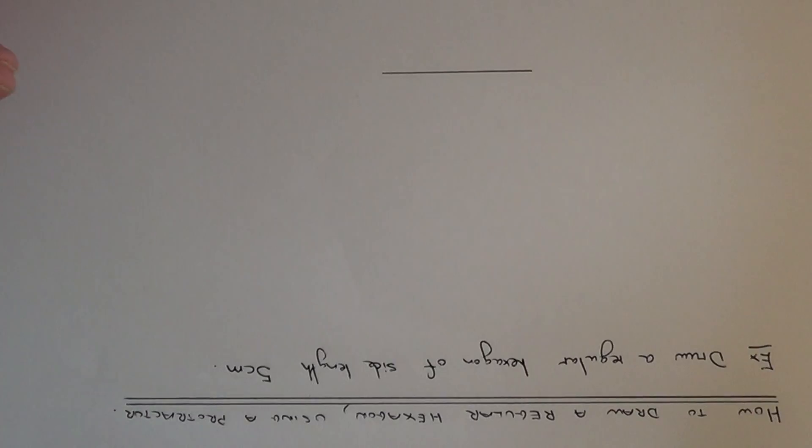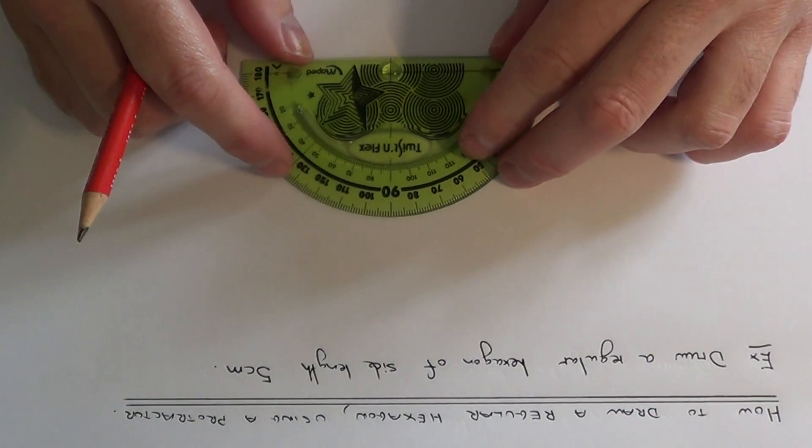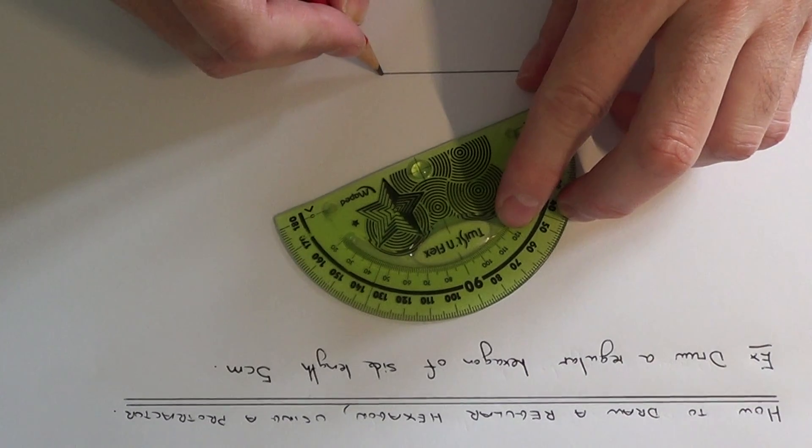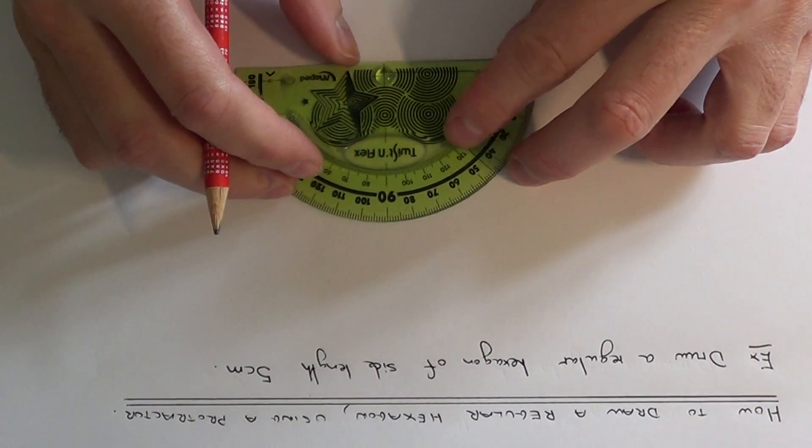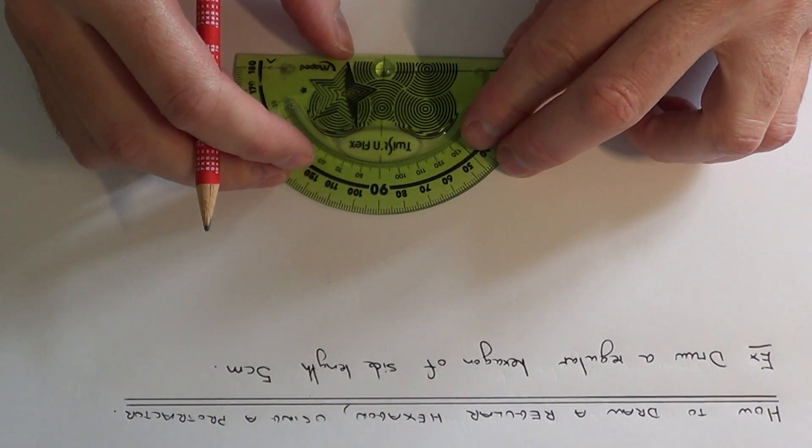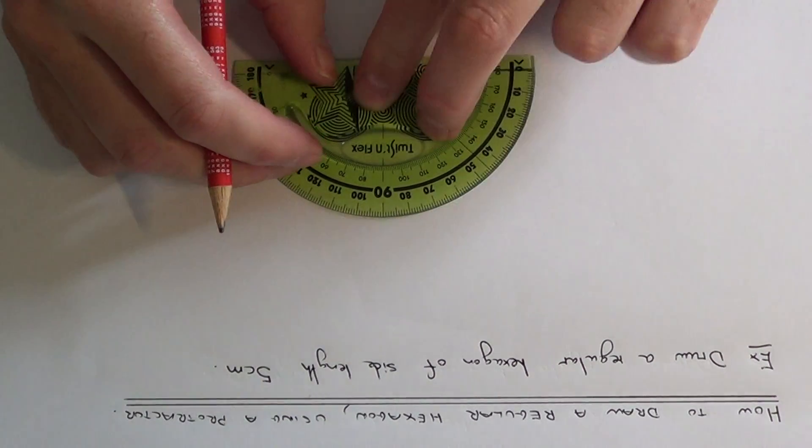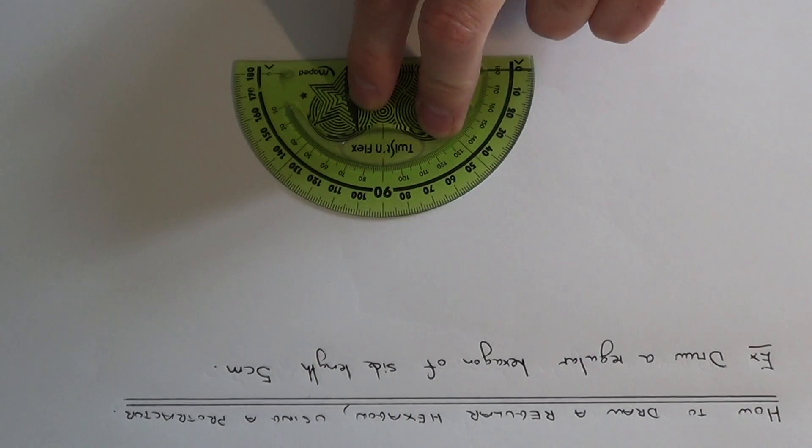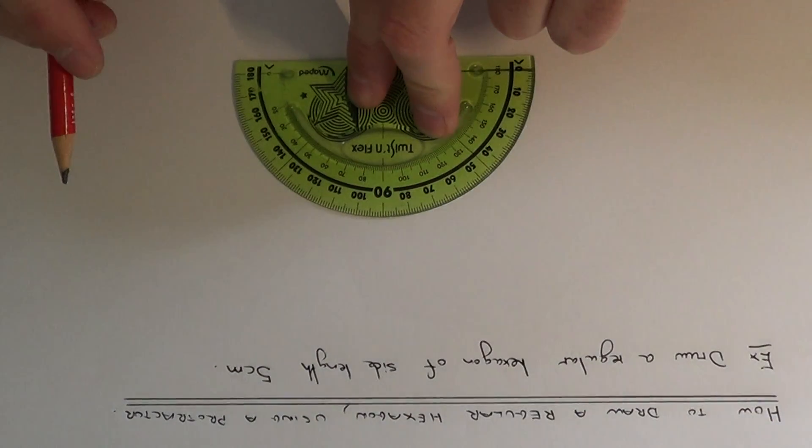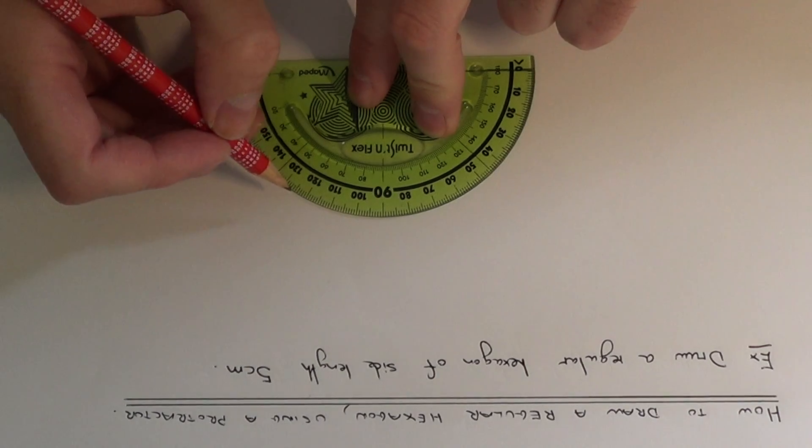Okay, so we now get our protractor and we've put our protractor on the edge, the end of the line. And what we have to do then is measure an angle of 120 degrees. This is because all the interior angles of a regular hexagon are 120.